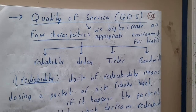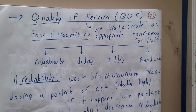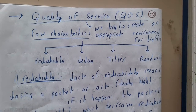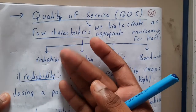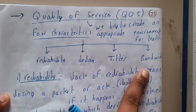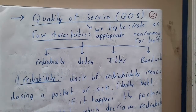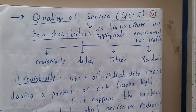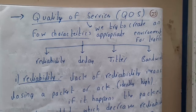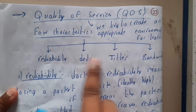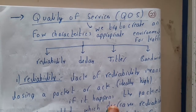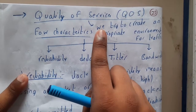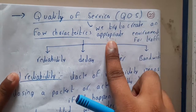Hello guys, we are back with our next lecture. In this lecture let us go through Quality of Services. We discussed about multiple things till now — delay, jitter, reliability, and bandwidth. These are the four characteristics you should check. Reliability should be more, delay should be less, jitter should be less, and bandwidth should be more. These are the properties that every networking application should have.